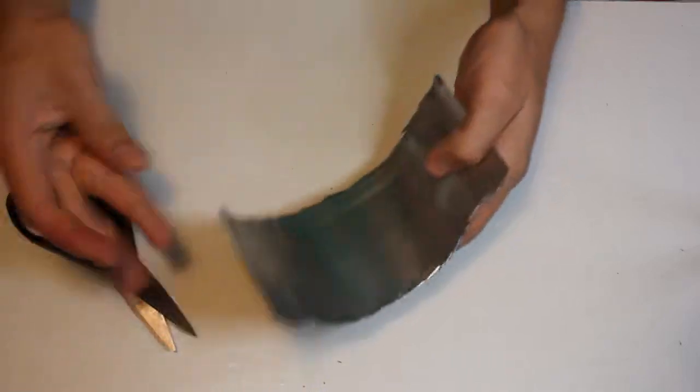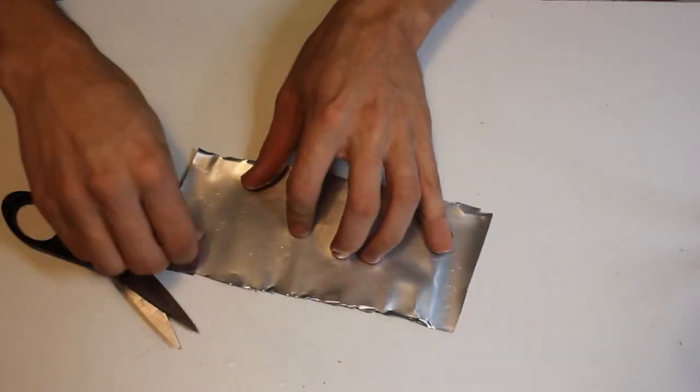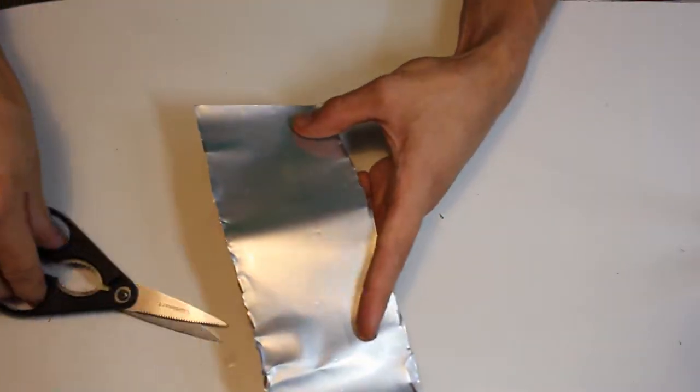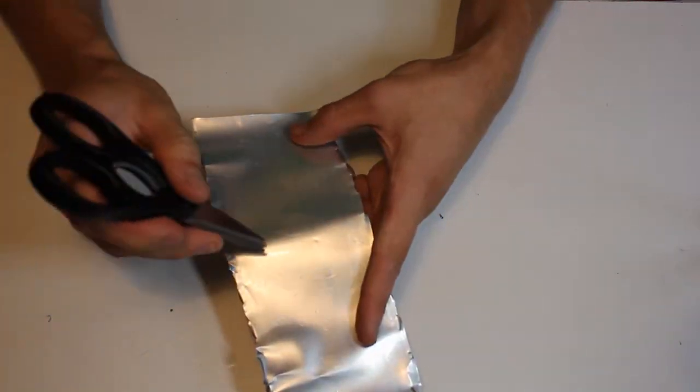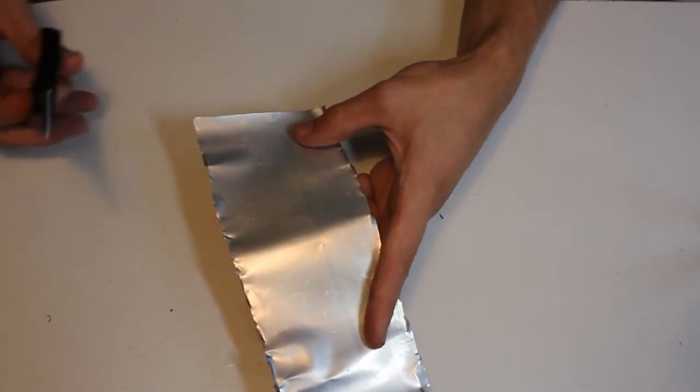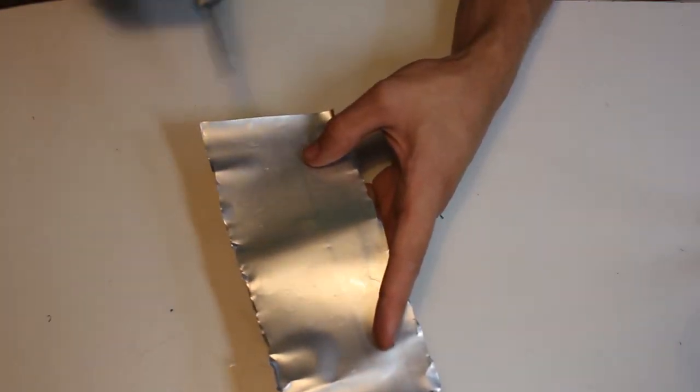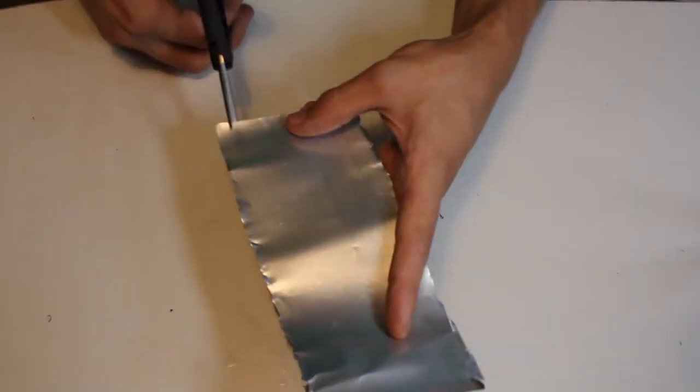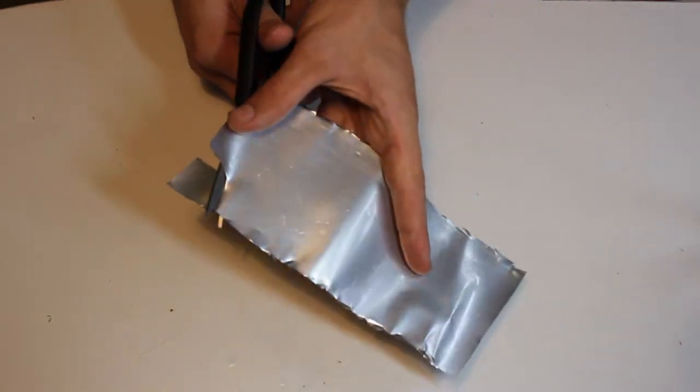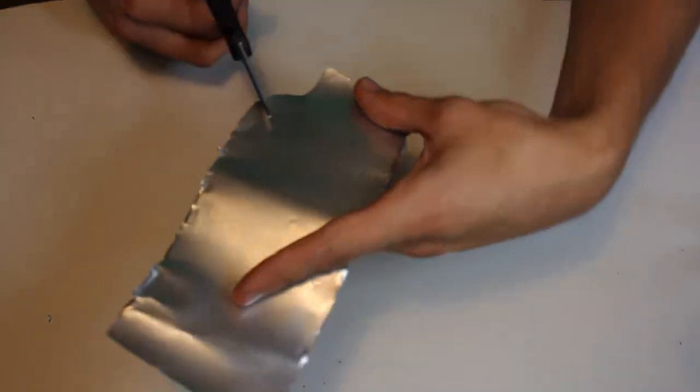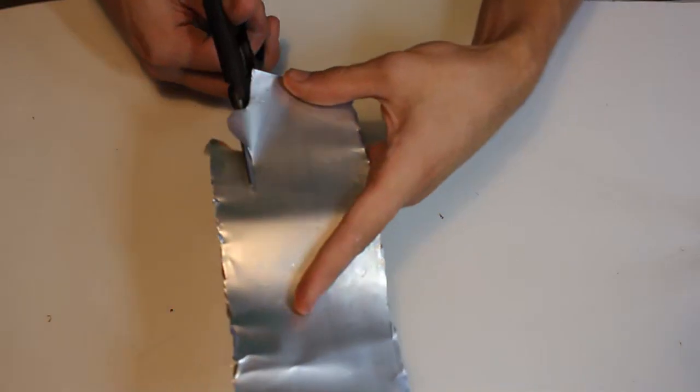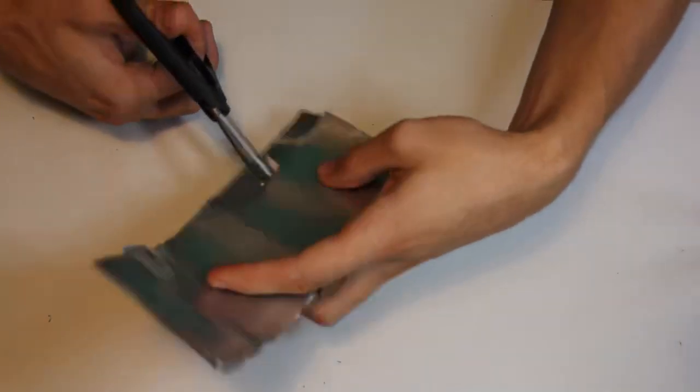So we can kind of flatten it a little bit. That just makes it easier to work with. And so next what we want to do is actually cut out our shim. So the basic shape that it's going to be is it kind of has a curve downwards, and that's the actual shim part. And we're going to leave about a centimeter strip on top of it so that we can fold that over to create a handle that we won't cut ourselves on.